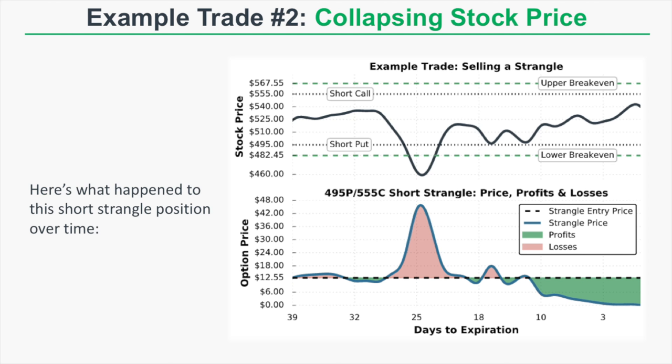A short strangle position has significant loss potential on the downside and upside if the stock price makes a large move — you really need to pay attention to your management strategy. Fortunately in this case the stock price rallied back up between the short strikes, and the position did expire worthless. If you had held it to expiration you would have made the full profit, but it was a very uncomfortable ride with that large loss when the stock fell to around $460.